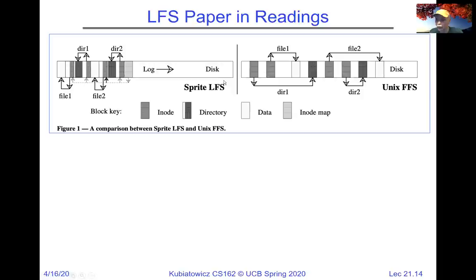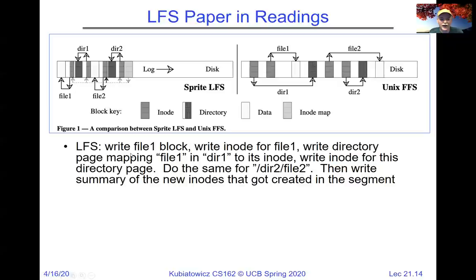I have the log-structured file system paper in the resources — the original one that was part of the Sprite system here at Berkeley. Let's suppose I create file one in directory one and file two in directory two. In the log-structured file system, I write the first block of file one, then an updated inode for file one, then an updated block in the directory, then change the directory's inode to point to that new block, then file two and directory two — and all of these things that would be spread all over the fast file system are actually sequential. In the fast file system, directory inodes are on the outside of a block group, file inodes are close to them, and file blocks are inside the block group. For the fast file system, I had to seek possibly back and forth, whereas the log-structured file system is one quick write.